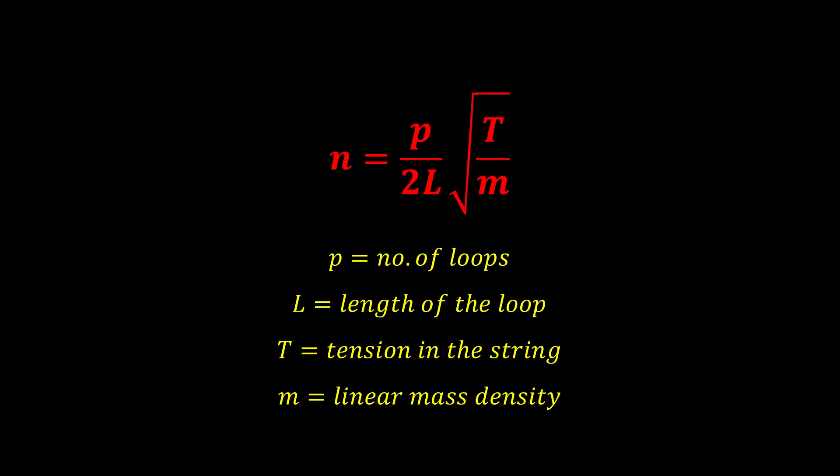Then using the formula n equals p divided by 2L times square root of T divided by m, we can find the frequency of vibrations.